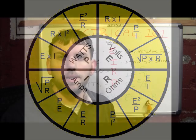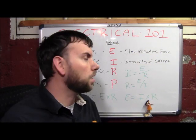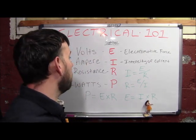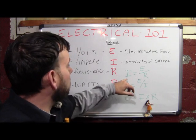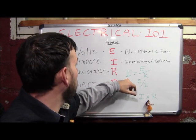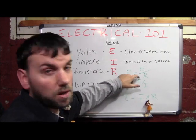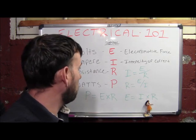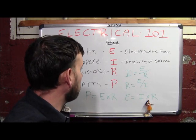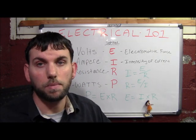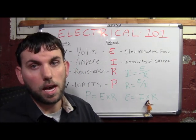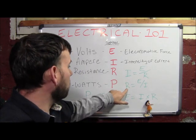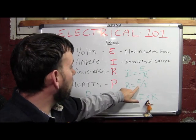Now let's talk about Ohm's Law. Ohm's Law states that amperage is equal to your voltage divided by your resistance. From Ohm's Law you can basically calculate everything else — for instance, you can figure out resistance if you know the voltage and the amperage.